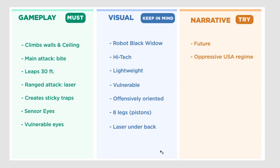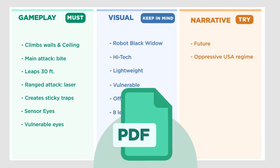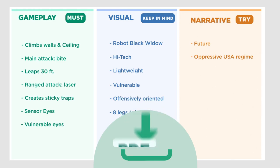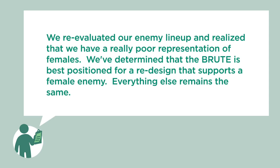Ryan's come back and even though you've made your second draft, there's a change of plans. The updated brief: they've re-evaluated the enemy lineup and realized there's poor representation of females, and the brute is best positioned for a redesign supporting a female enemy — everything else remains the same. Remember to change as little as you can and keep in mind those strategies from the demo. A PDF copy is available via the link below. Have fun with this, take your time, and I'll see you in the next lesson.